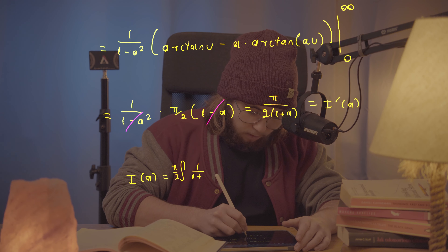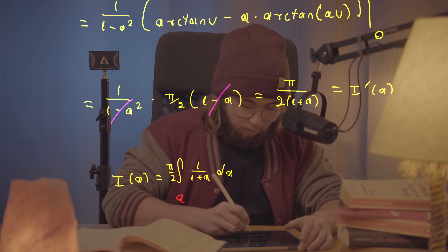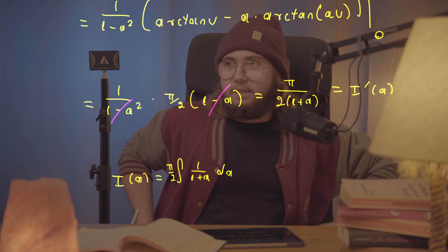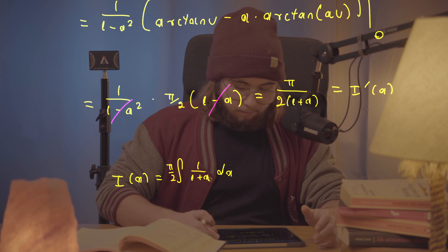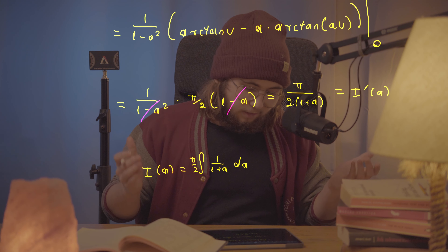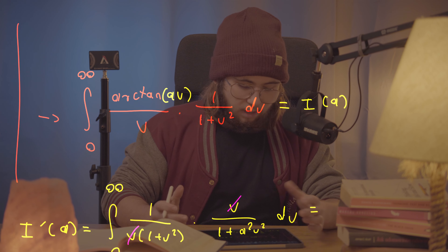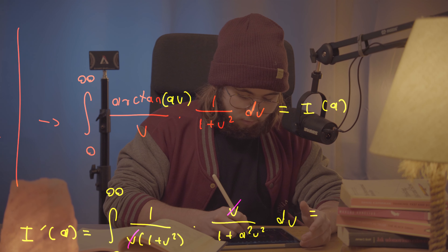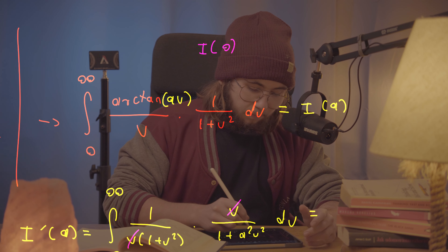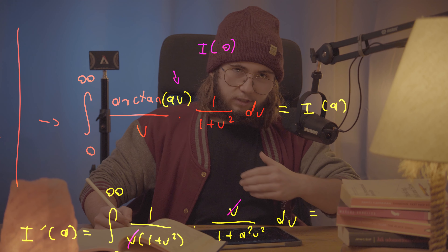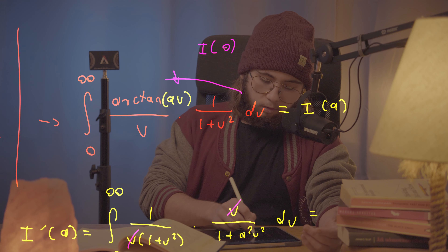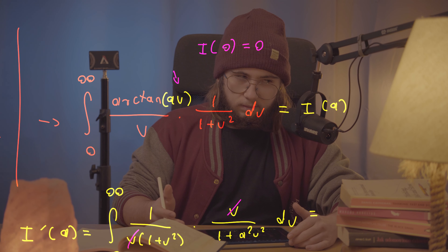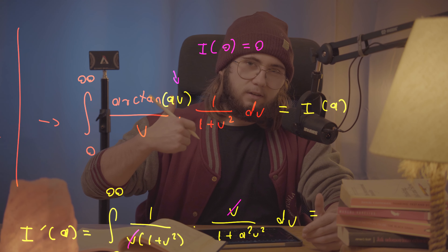Now I can integrate I'(a) to recover I(a). Rather than dealing with an arbitrary constant, I'll use definite integration. I need to find smart bounds. Going back to the original definition of I(a), if I plug in a = 0, the arctan(0·u) = 0 everywhere, so I(0) = 0. The value I care about is I(1), which corresponds to the original integral.